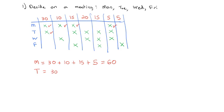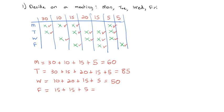Tuesday's got 30 votes, 15 votes, 20 votes, 15 votes, and 5 votes. If we add that up, that's a total of 85 votes. Wednesday works for 10 people, plus 20 people, plus 15 people, plus 5 people, adding that up, we get 50 people. And for Friday, there's 15 votes, plus 15 votes, plus 5 votes, and that's 35 votes.